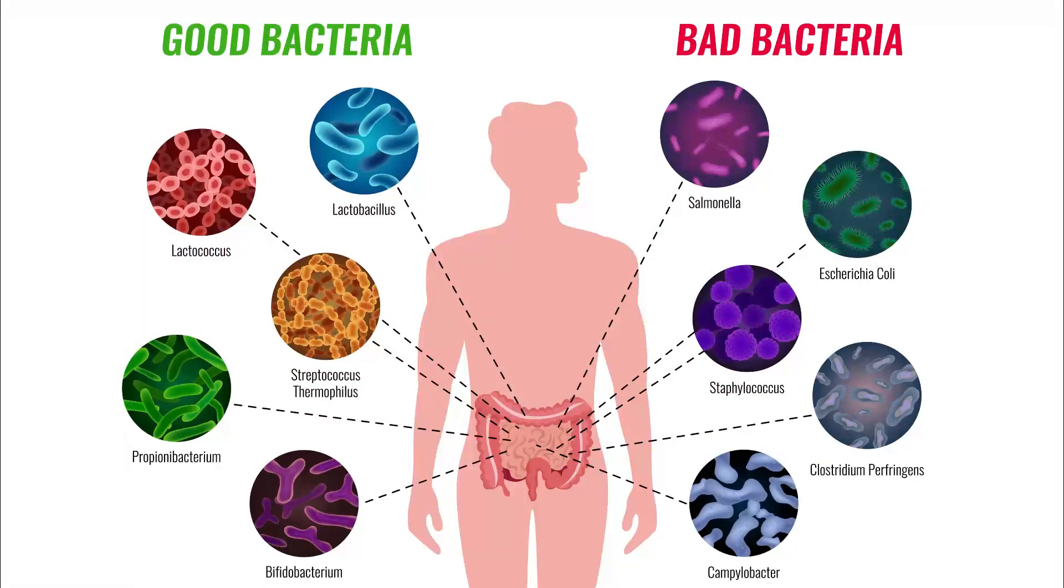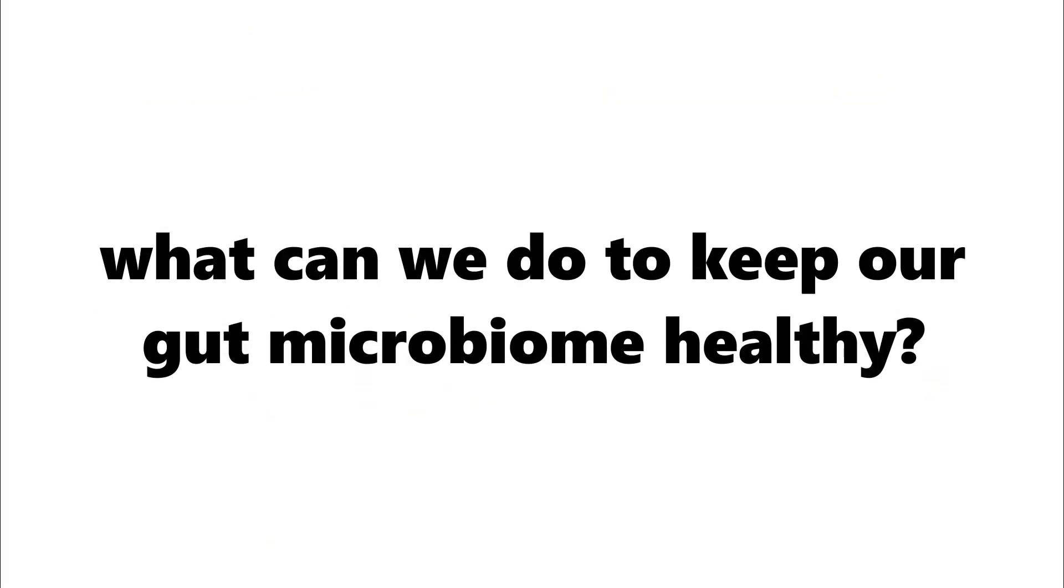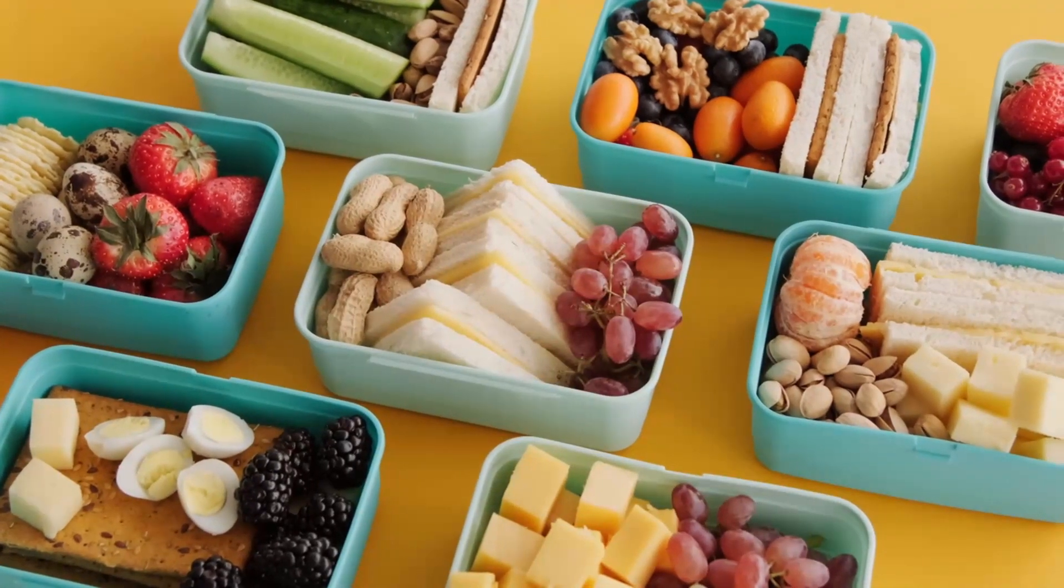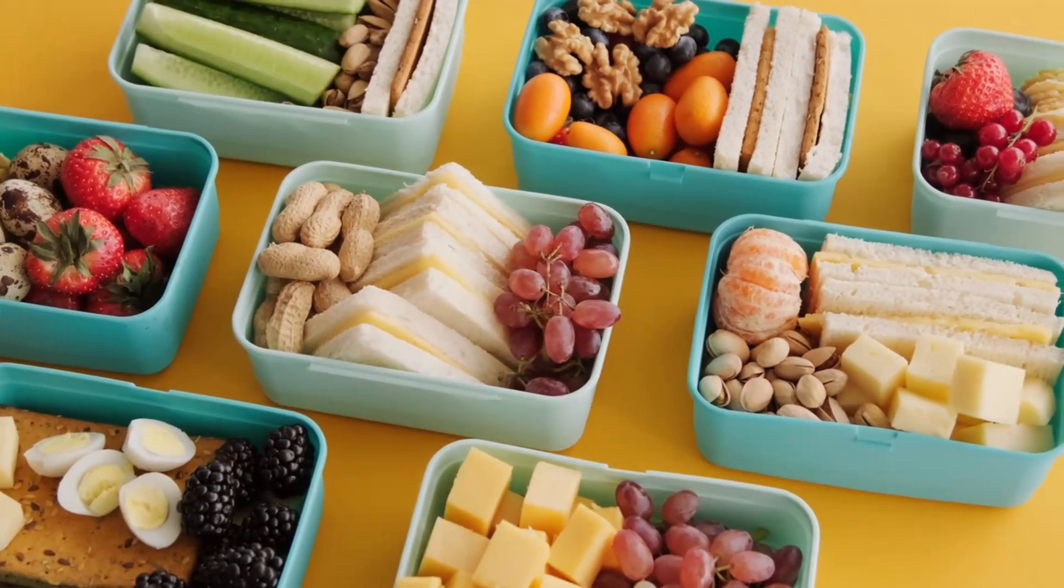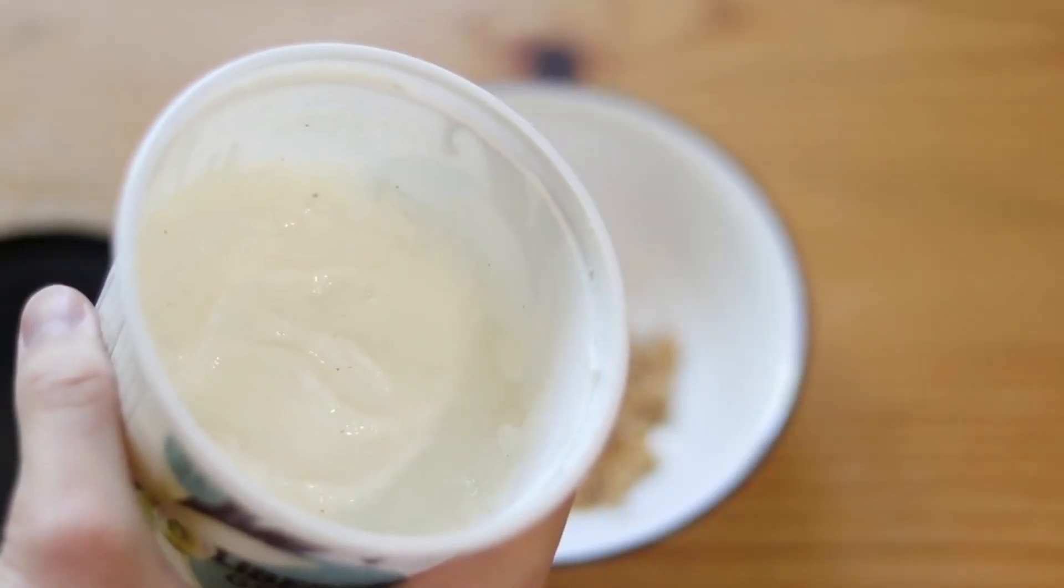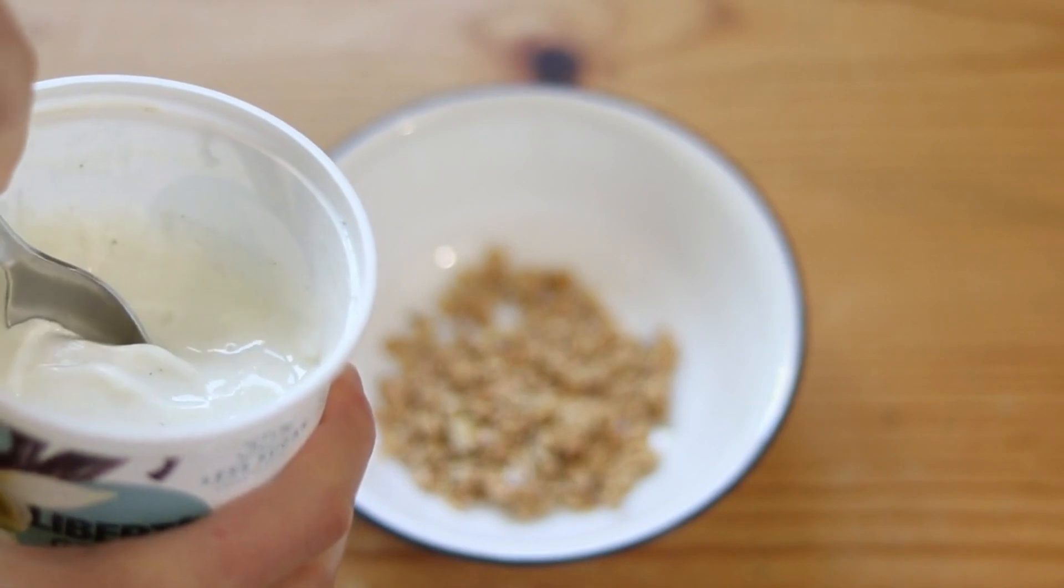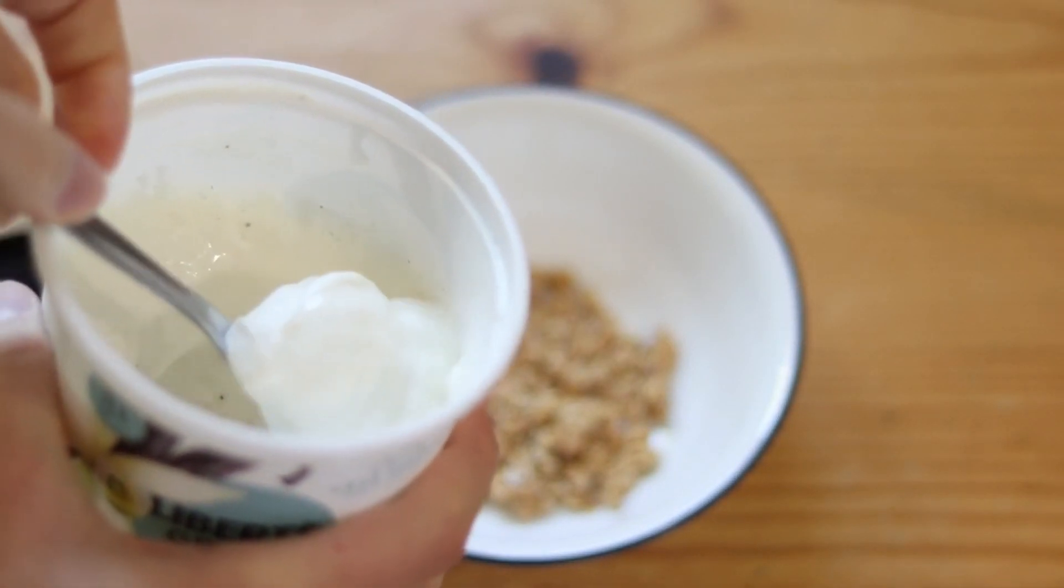However, maintaining a healthy balance of gut microorganisms is key to preventing such infections. So what can we do to keep our gut microbiome healthy? Eating a diet that is rich in fiber and low in processed food can help promote the growth of beneficial microorganisms in our guts. In addition, taking probiotics and prebiotics can also help maintain a healthy gut microbiome.